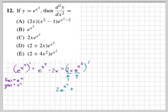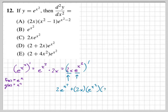Then we take the derivative of the second one times the first one. We write the first one — 2x — first, then take the derivative of e to the x squared again using the chain rule. That gives e to the x squared times the derivative of x squared, which is 2x. Multiplying these together, we get 2e to the x squared plus 4x squared times e to the x squared.